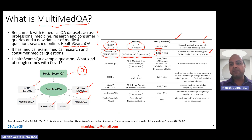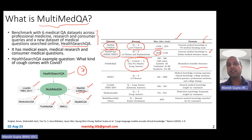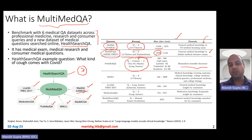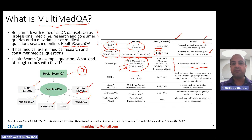PubMedQA is essentially biomedical scientific literature, and it has a question, context, and answer format — more like reading comprehension style. You are given a passage and must come up with an answer within that context. The answer has to be yes, no, or maybe, and there is also a long answer describing why. It's a relatively smaller dataset.